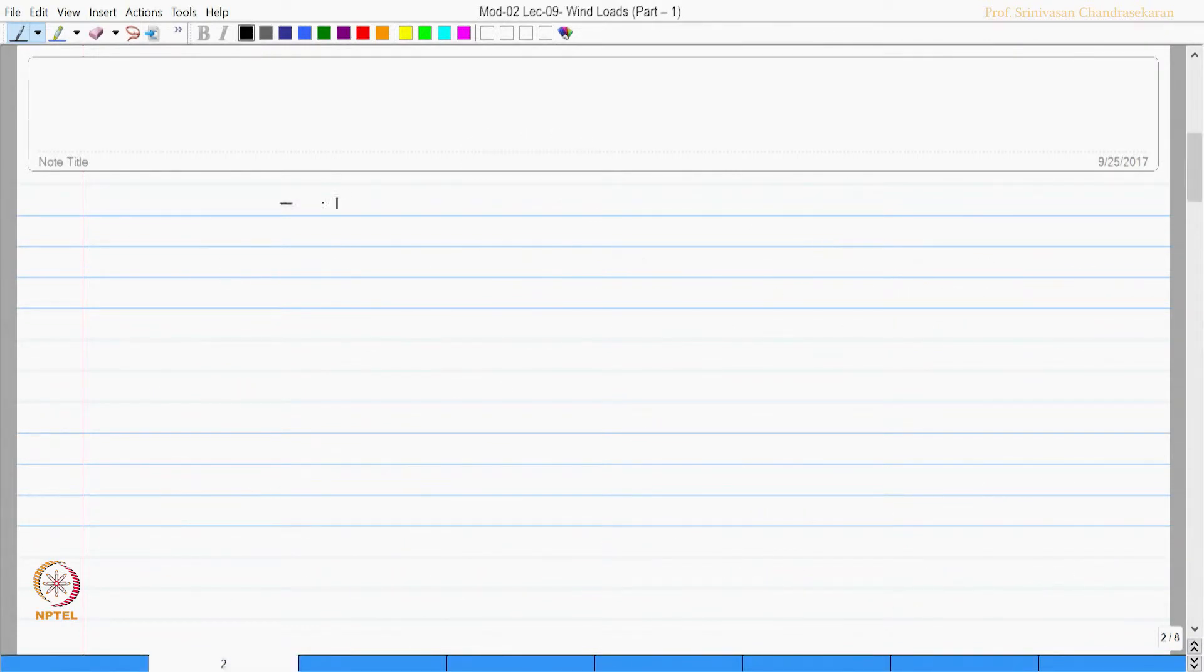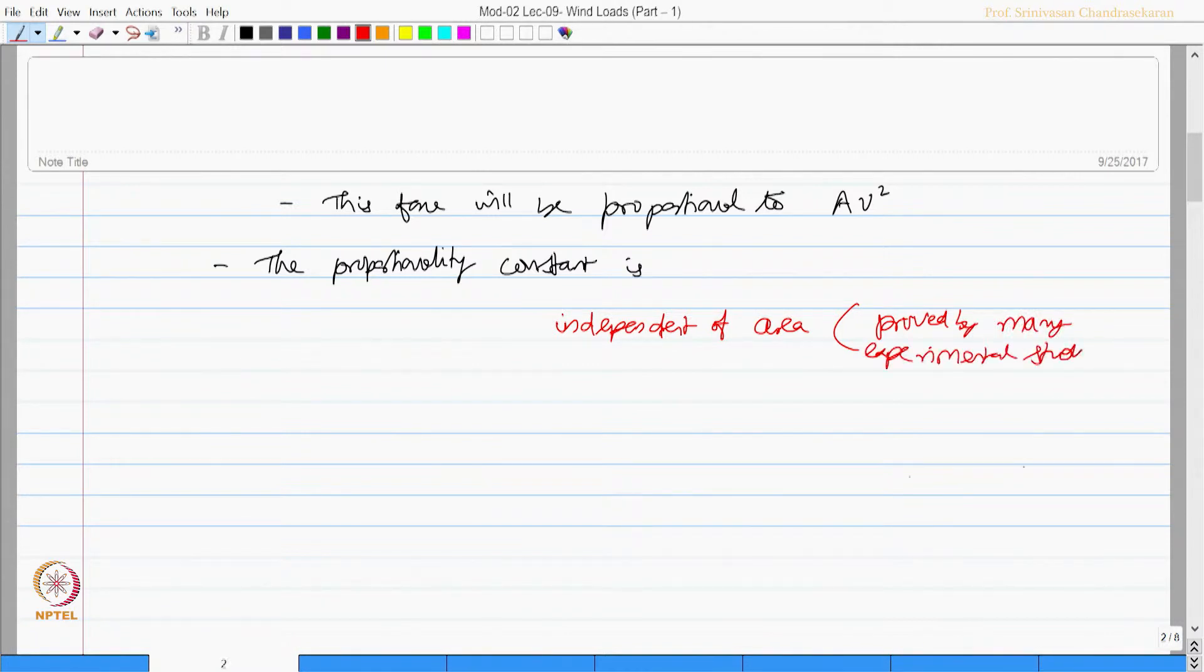This force exercised on the plate will be proportional to A v square. The proportionality constant is interestingly independent of area, proved by many experimental studies.